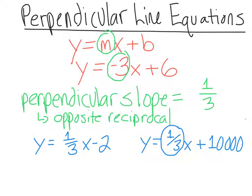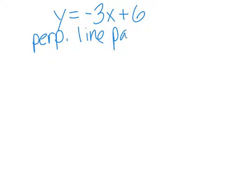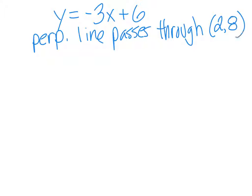Here's where it gets tricky — sometimes they want a perpendicular line that goes through a specific point, much like you did with the parallel lines. If you can handle parallel lines going through a specific point, then you can handle this. We'll go with y equals negative 3x plus 6, and we want a perpendicular line that passes through the point 2, 8.